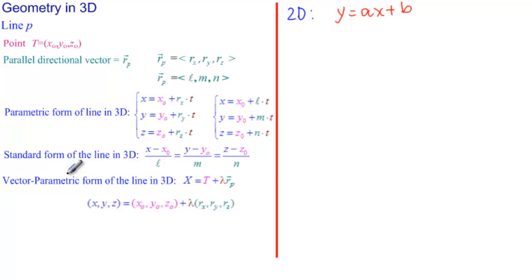Well, let's take what it says, a point t, and make it in two dimensions, so just x0, y0, and we want a parallel directional vector. We'll say a parallel line. We want it to be parallel to y equals ax plus b.